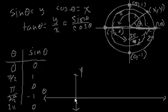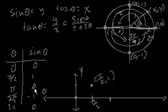When theta equals 0, sine of theta equals 0, so that's this point right here, 0 comma 0. When theta equals pi over 2, sine of theta equals 1, so this is the point pi over 2 comma 1. When theta equals pi, sine of theta is 0 again, so this is the point pi comma 0.